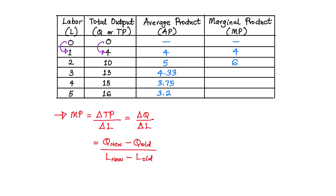Next, the quantity increases from 10 to 13 when the amount of labor used increases from 2 to 3. The marginal product will be 13 minus 10 divided by 3 minus 2. Simplifying: 13 minus 10 is 3, divided by 3 minus 2 is 1, which means 3 divided by 1 is 3. So the change in quantity by one change in labor used is 3.